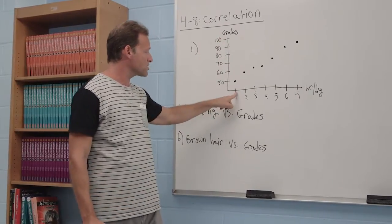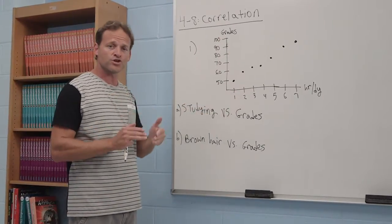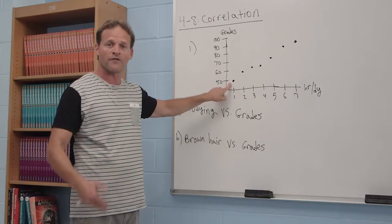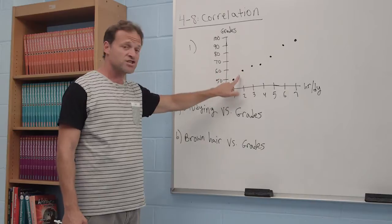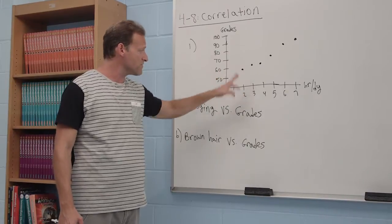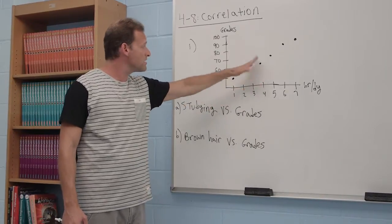For example, if a student studies one hour a day, he or she could expect a 50 on the next test. If this student studies two hours a day, they'll get a 60. Three hours, 65. Four hours a day, 66.